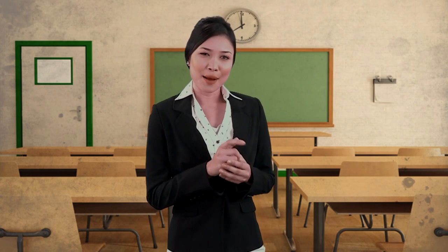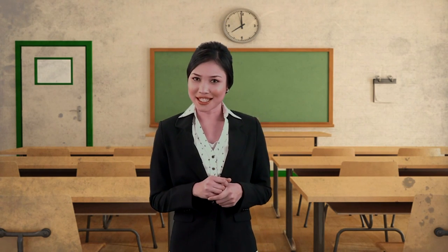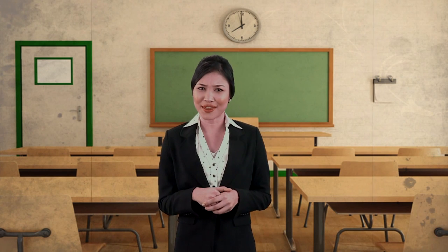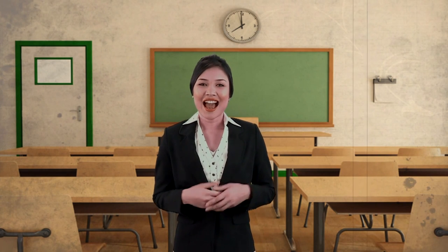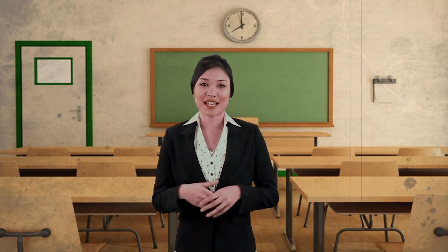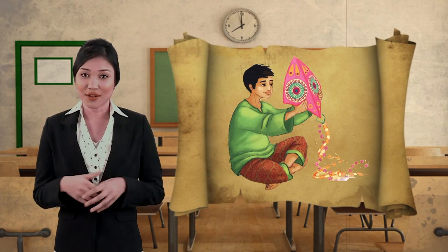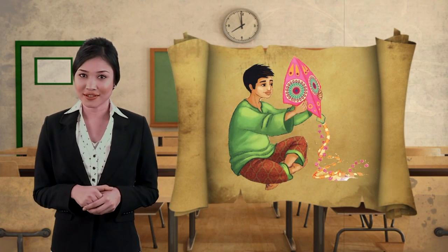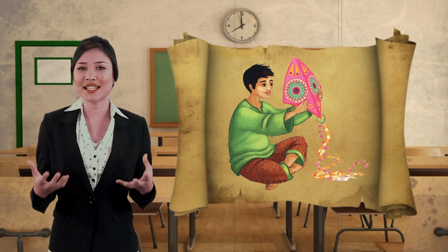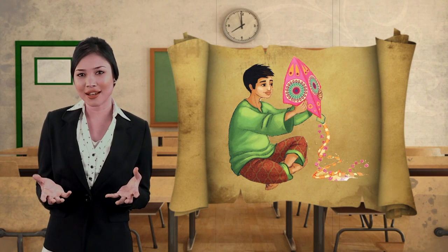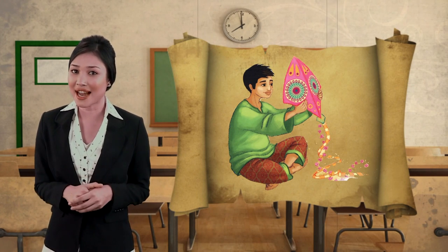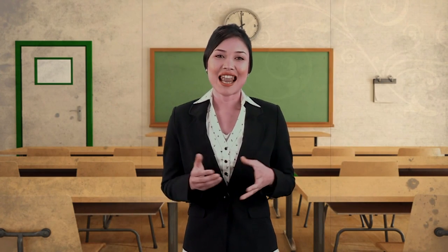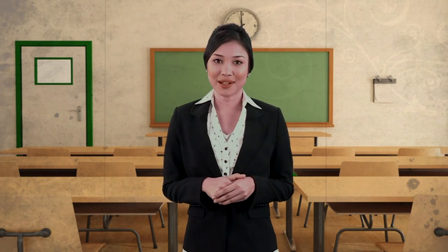Hmm, I wonder what this story is about — The King of Kites. What do you think? I think it has something to do with the boy and the kite on this book cover. I wonder why he is called the king. Maybe his kites are special kites. Let's flip the book over and read the blurb.